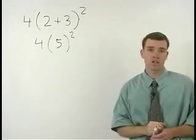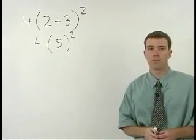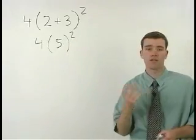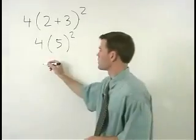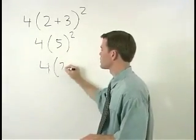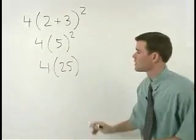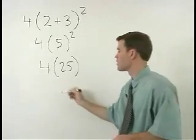Remember to do exponents before you multiply. So 5 squared is just 5 times 5, or 25. So in our next step we have 4 times 25, which simplifies to 100.